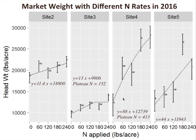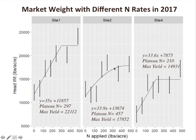In 2017 with the extra rates, we were able to fit plateau models to all the sites that didn't die due to pests and disease, and we could calculate the nitrogen value at the plateau: 297, 457, and 210 pounds per acre. I figured we were probably pretty close to the plateau last year, but if you don't go beyond it, you can't really model it — so it turns out we were pretty close.